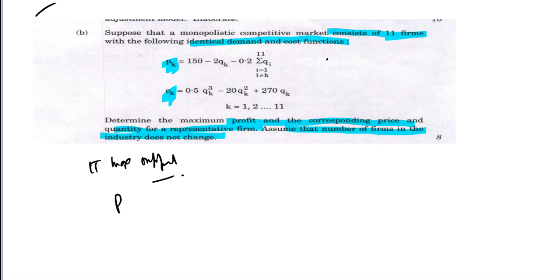Given P is equal to what we have, and the cost function is also given. To find the marginal cost, we take its derivative. Marginal cost will be 1.5 times 3 into 5, Q_k squared minus 40 Q_k plus 270.